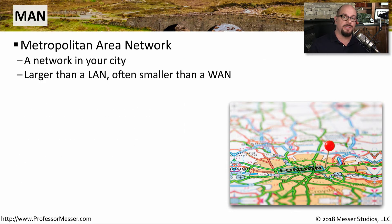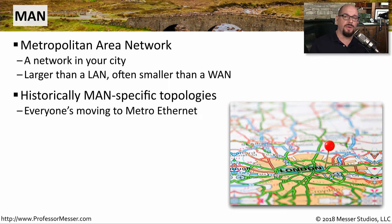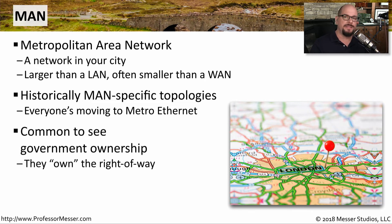A network that might connect two locations in a large city might be a metropolitan area network. This would be a network that is much larger than a local area network, but doesn't have the wide scope that you would find in a wide area network. There have traditionally been non-Ethernet topologies used for metropolitan area networks, but most MANs these days are connecting locations with metropolitan Ethernet, so the end stations would simply receive an Ethernet connection on both sides. It's common to see metropolitan area networks being used by governments, since they already own the right of way, making it relatively easy to put fiber in the ground and connect all of their locations together.